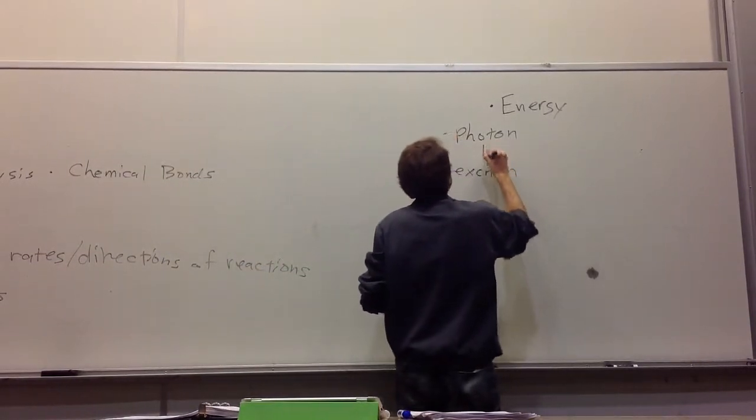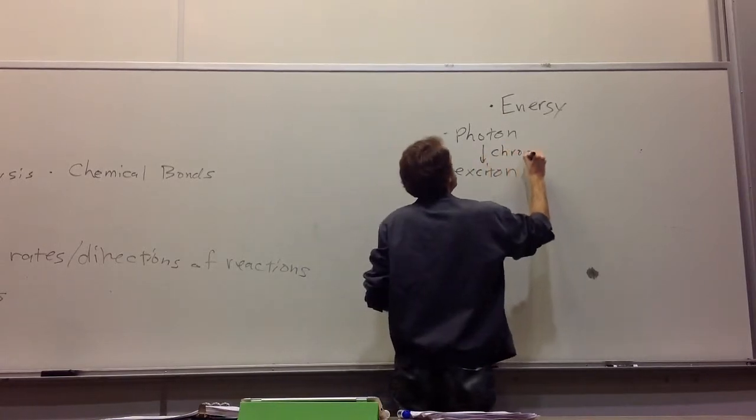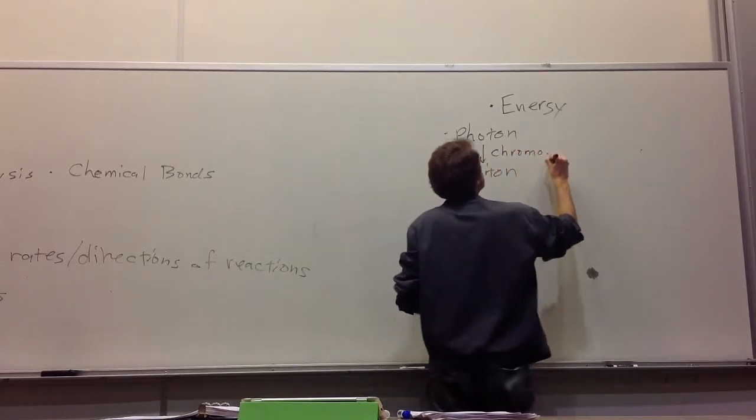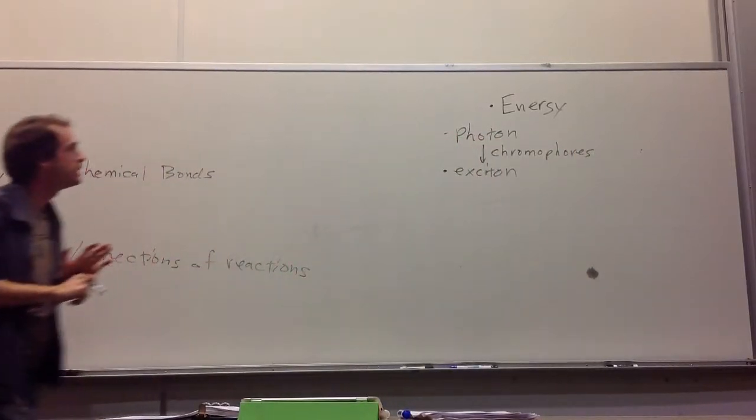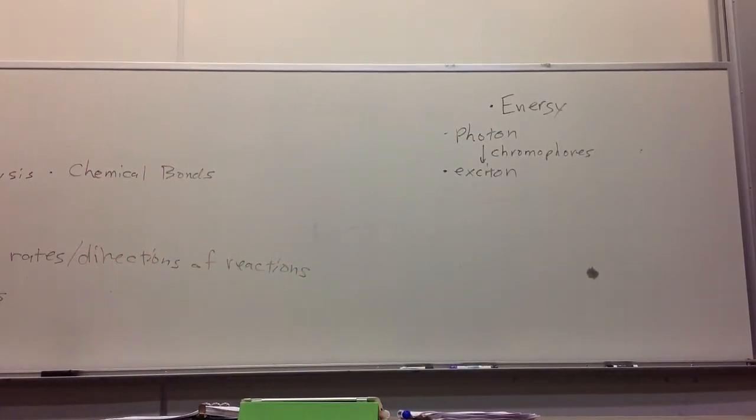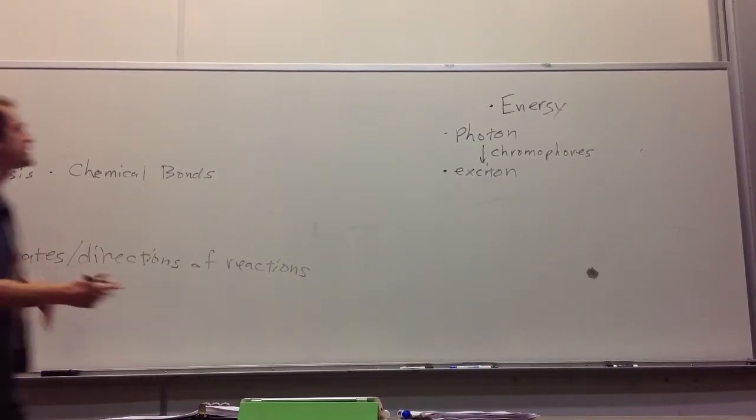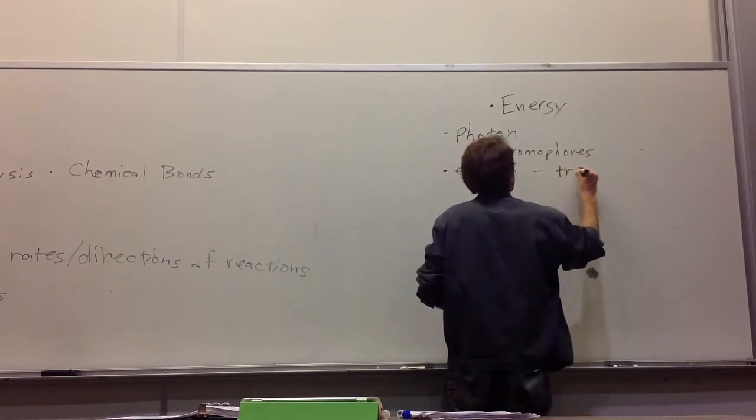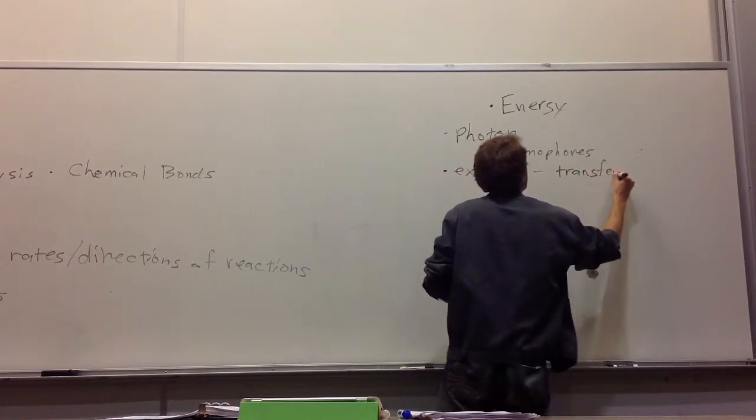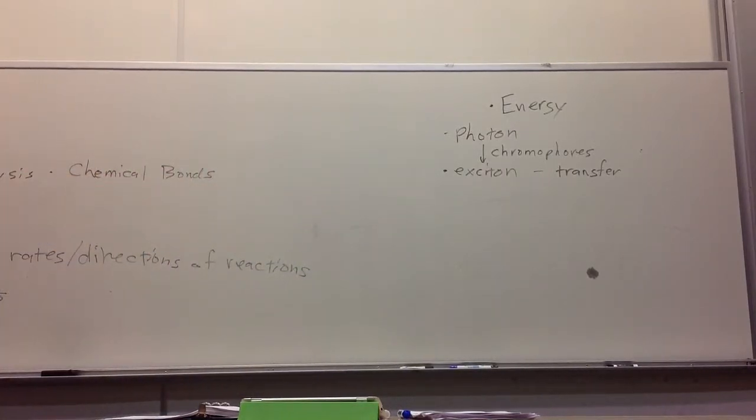And we saw that chromophores do this conversion. You can think of this as a reaction. Chromophores catalyze the conversion of photon energy into exciton energy. And they're also able to transport this exciton energy. We talked about exciton transfer, how it can move this energy around in space to other locations.